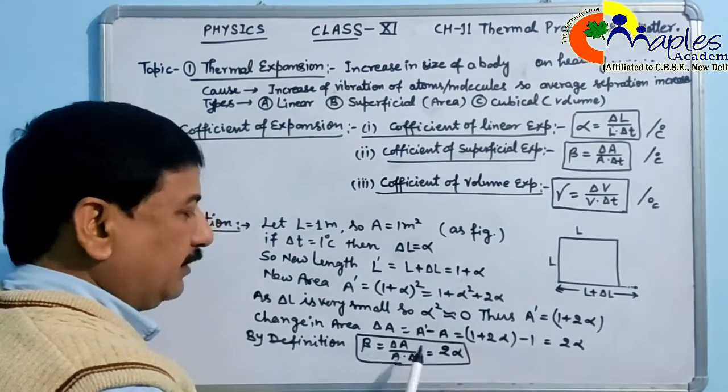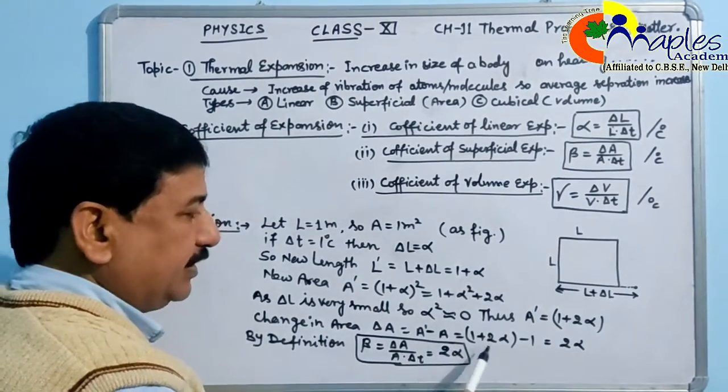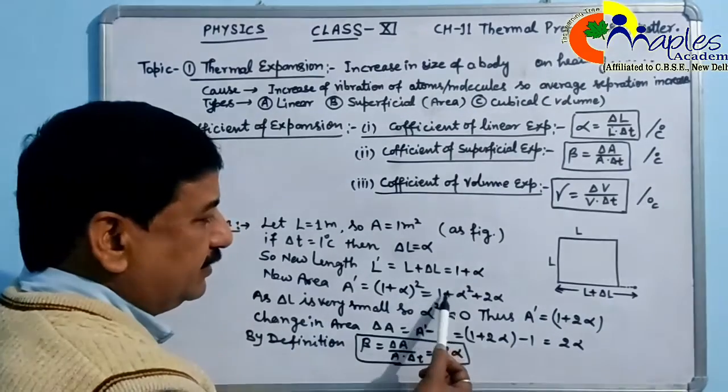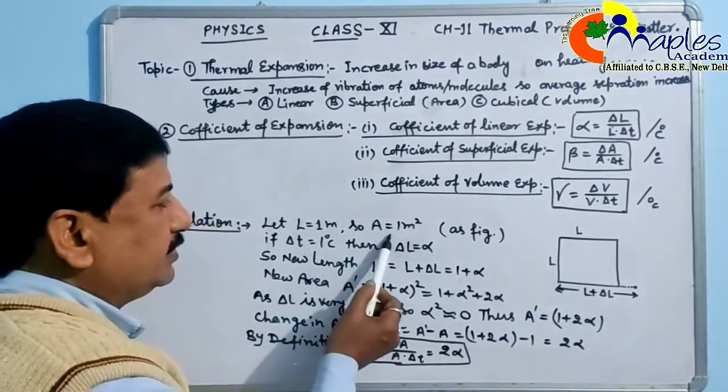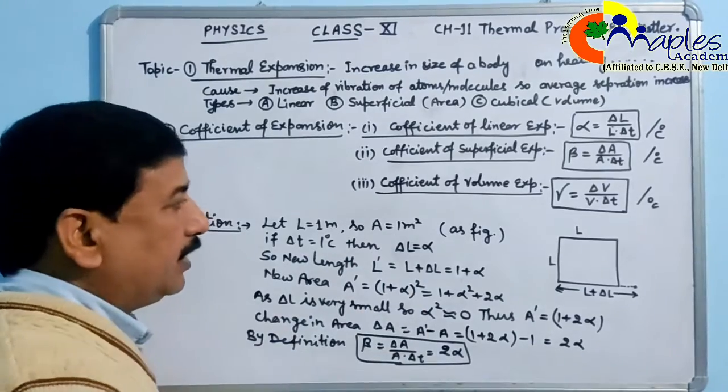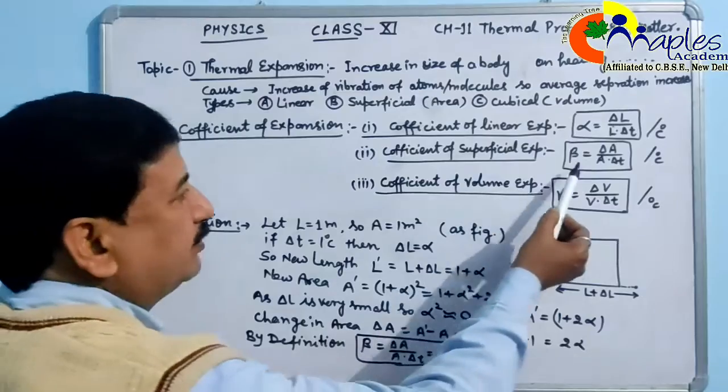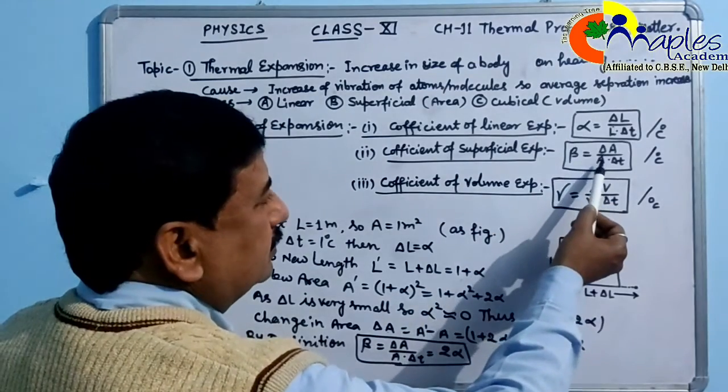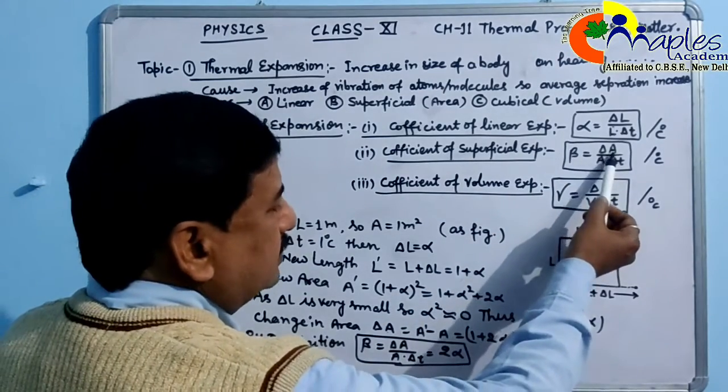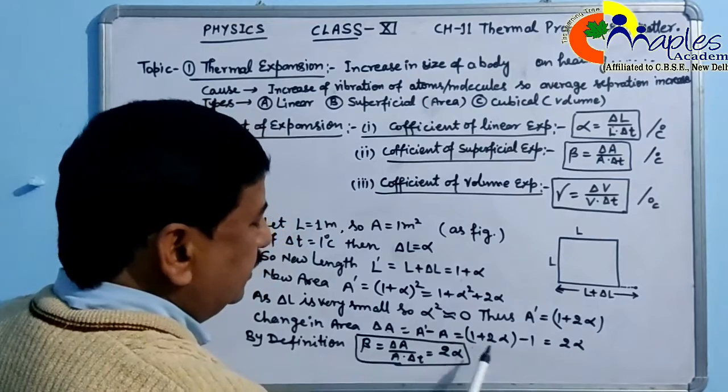The change in area is A' minus A. A' equals 1 + 2α. So A' minus A equals 1 + 2α minus 1, which equals 2α. Now, using the formula beta = ΔA / (A × ΔT), where A = 1, ΔT = 1, and ΔA = 2α, we get beta equals 2 alpha.